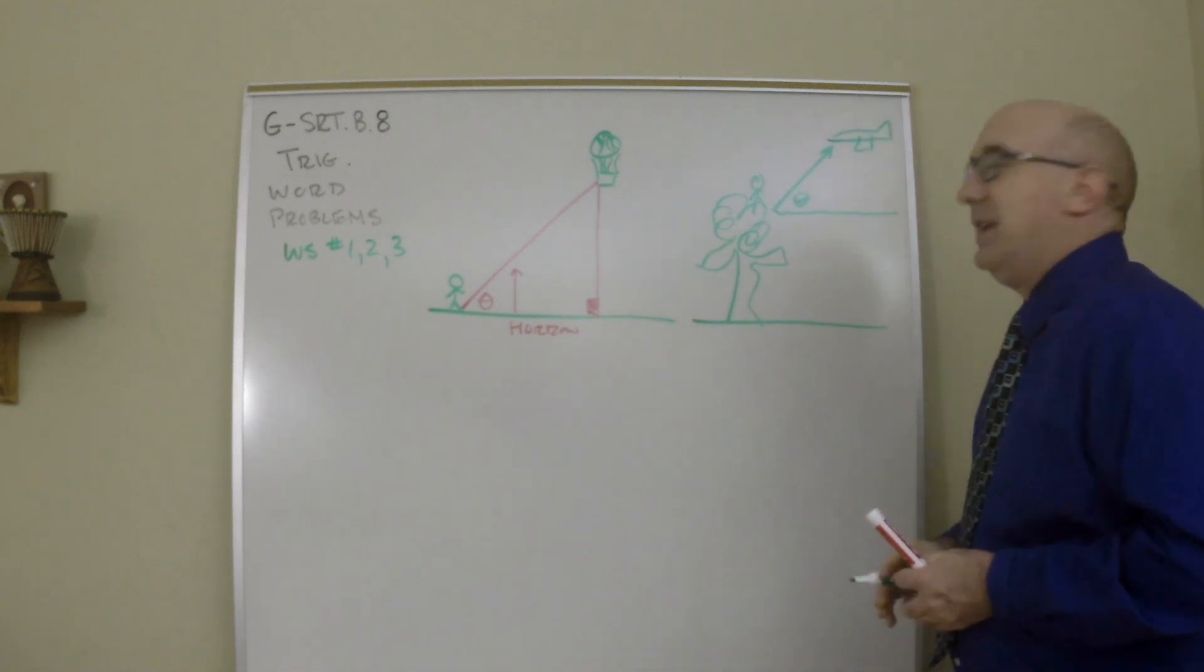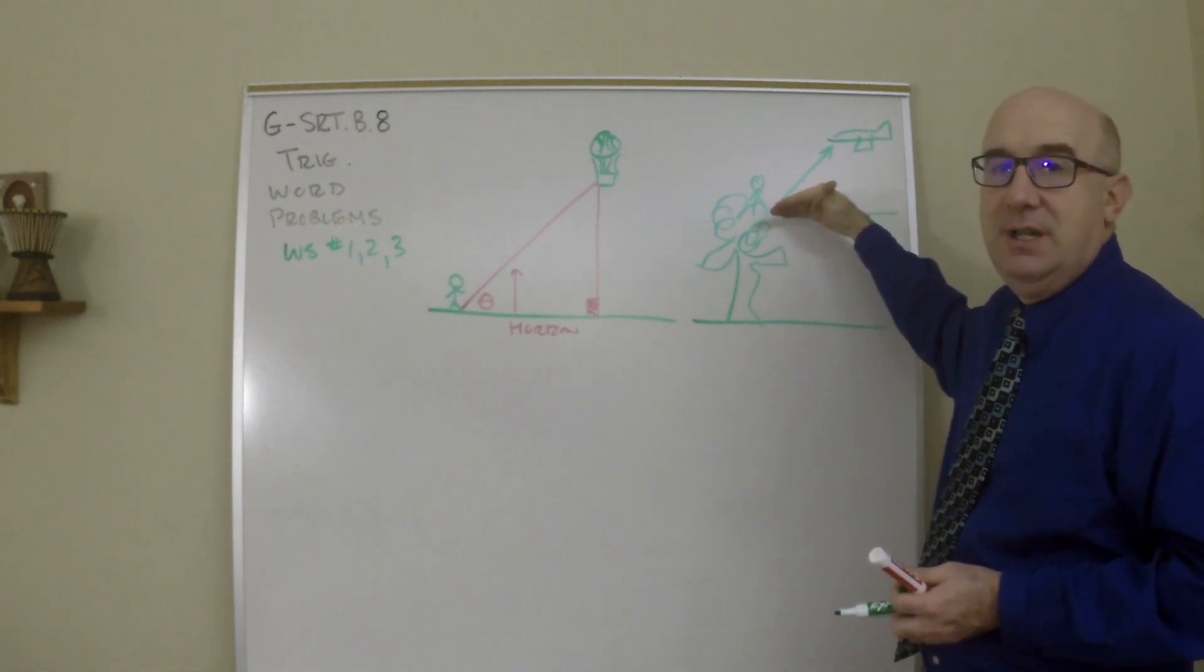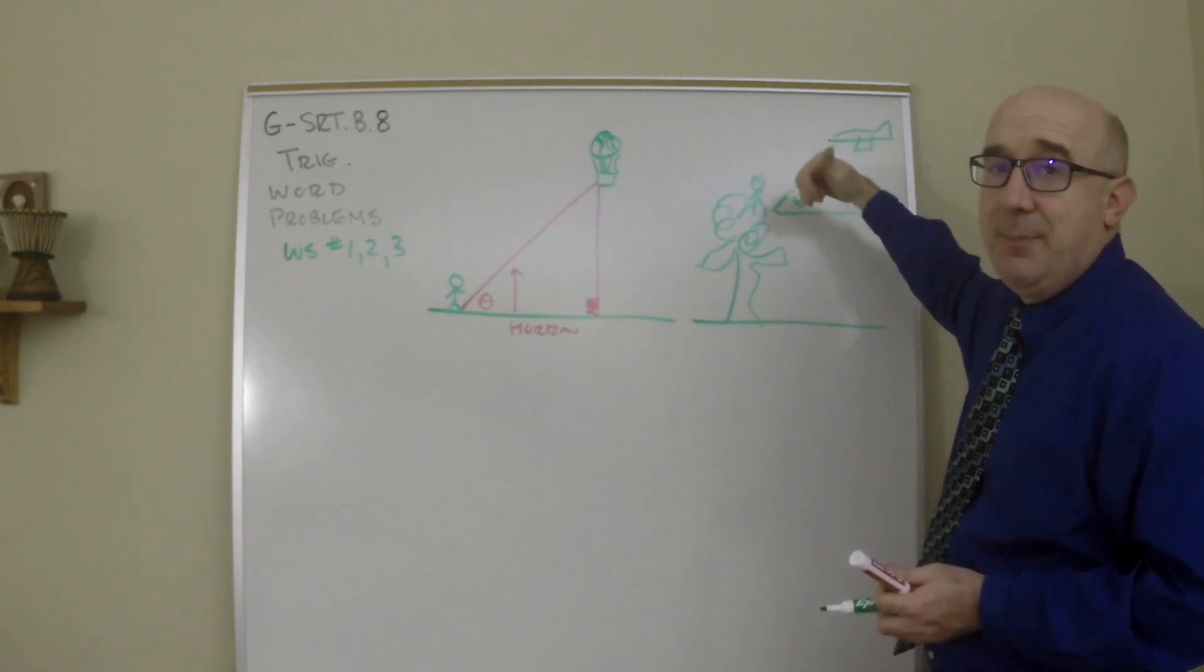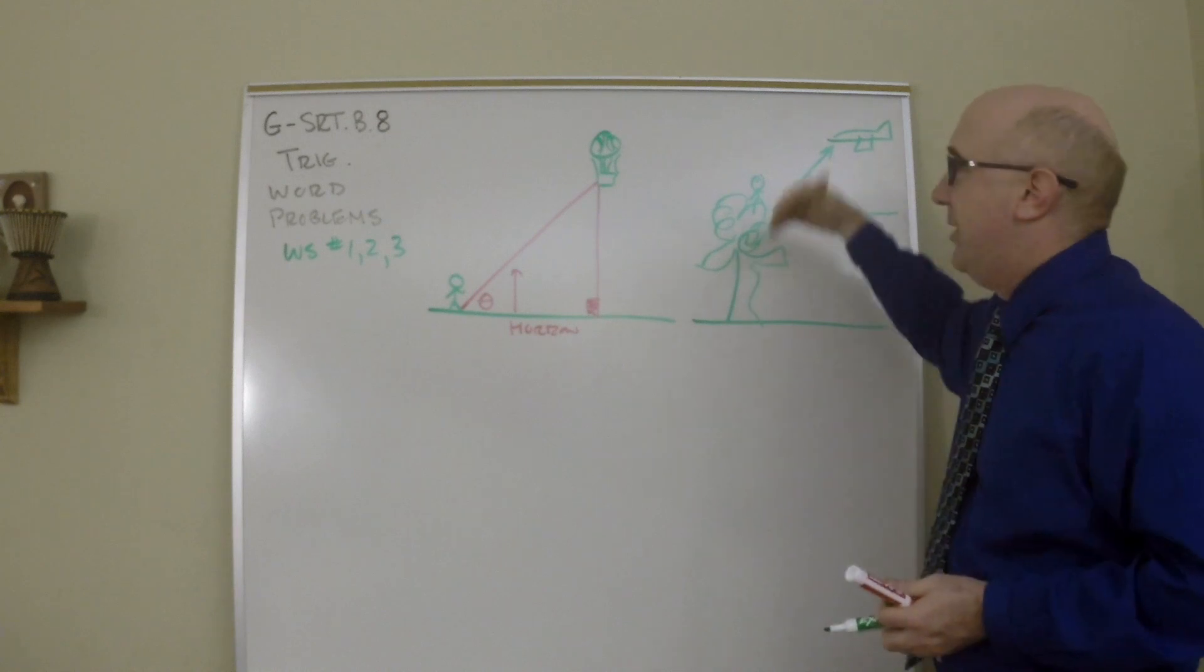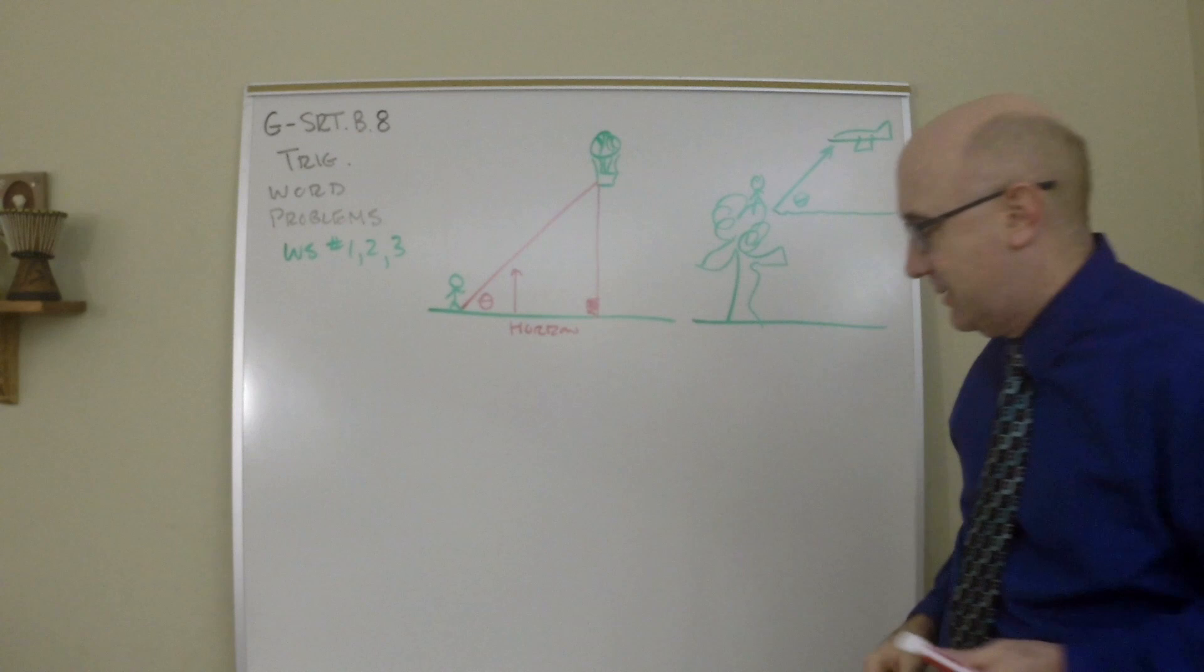Again, it's from your horizon looking up. So they'd have to give you some more information about maybe how high you are in the tree and things like that. But all I'm worried about is it's from the horizon you're at in an upward manner. You can be on a tree, on a building. You can be at ground level. Whatever the case may be.